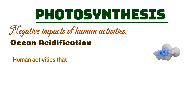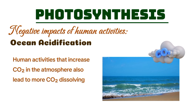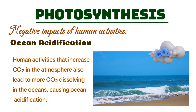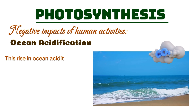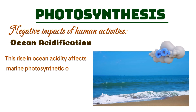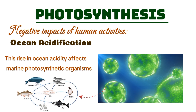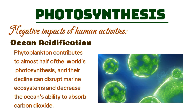Human activities that increase carbon dioxide in the atmosphere also lead to more CO2 dissolving in the oceans, causing ocean acidification. This rise in ocean acidity affects marine photosynthetic organisms like phytoplankton, which are essential to the marine food chain and global carbon cycling. Phytoplankton contributes to almost half of the world's photosynthesis, and their decline can disrupt marine ecosystems and decrease the ocean's ability to absorb carbon dioxide.